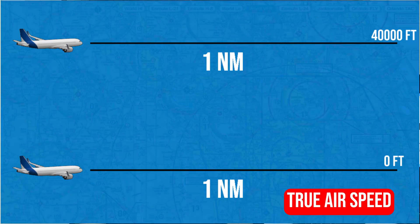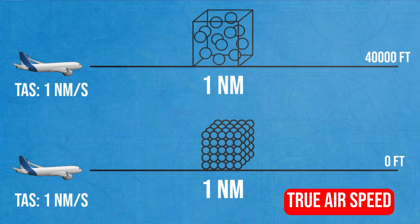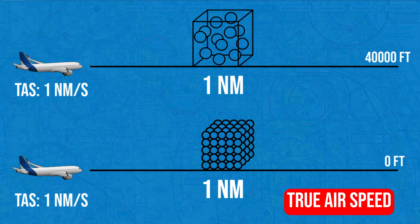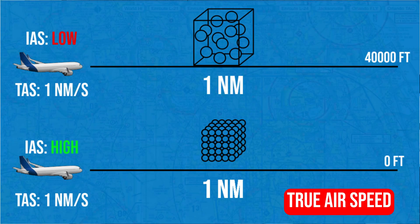For instance, say we have two cubes of air that are one mile long. One of them is at 40,000 feet of altitude, and the other is at sea level. Two airplanes are going to fly through those cubes of air at a constant true airspeed of one mile per second. The indicated airspeed of the airplane flying at sea level will be way higher than the indicated airspeed of the one flying at 40,000 feet, because air is less dense up there, so a lesser amount of air flows over the wings of the airplane flying at flight level 400, even though the true airspeed is the same.